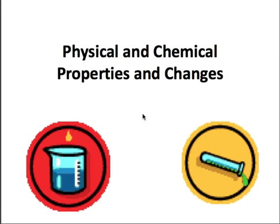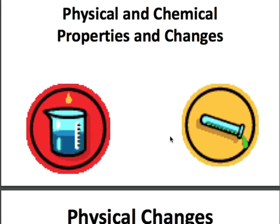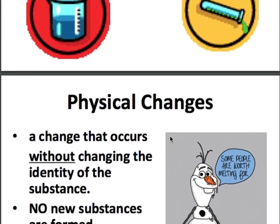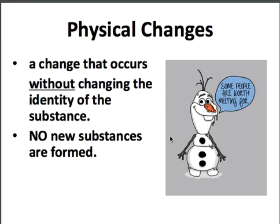So, physical and chemical properties and changes. A physical change is a change that occurs without changing the identity of the substance. What that means is no new substances are formed.